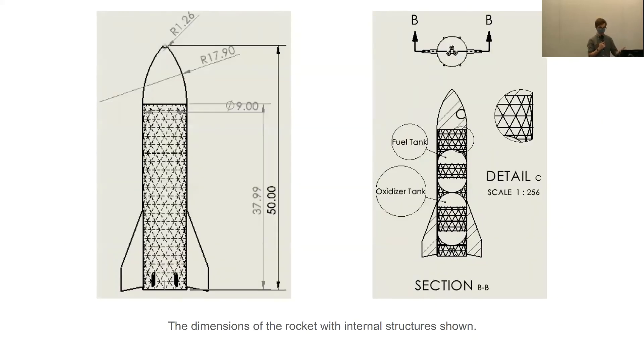The dimensions of the rocket are shown here. The one on the left shows that the total height of the rocket is 50 meters, and the secondary payload and propellant tanks area is 38 meters tall. The one on the right shows the internal dimensions of the rocket, and it can be seen that the fuel tank is above the oxidizer tank. This also shows a detailed view of the isogrid. But it should be noted that this is a representation of the isogrid, and the isogrid shown here is 10 times the actual size.